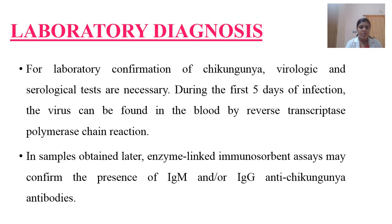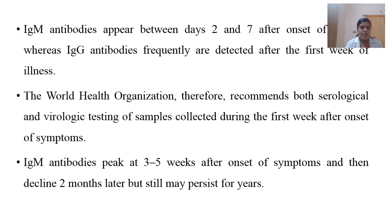Regarding the laboratory diagnosis, the laboratory confirmation of Chikungunya is mainly based upon virological studies. During the first five days of infection, the virus can be found in the blood by reverse transcriptase polymerase chain reaction (RT-PCR). In certain samples obtained later, enzyme-linked immunosorbent assays (ELISA) can also confirm the presence of IgM or IgG anti-Chikungunya antibodies. As per the WHO, both serological and virological samples should be collected during the first week as well as after the onset of symptoms.